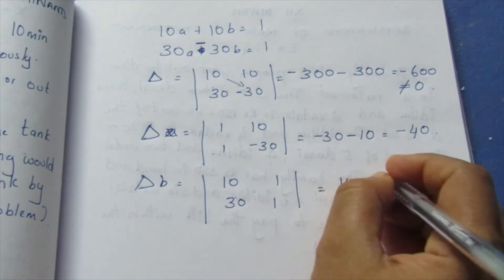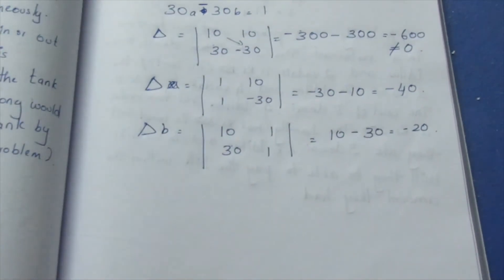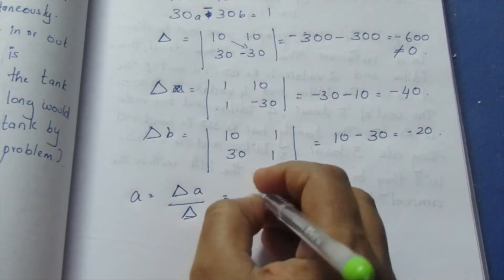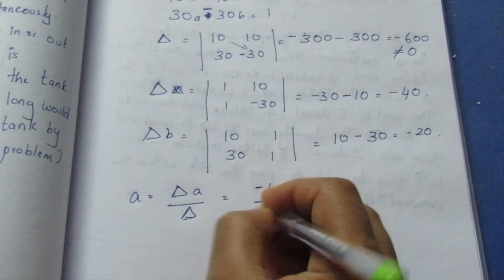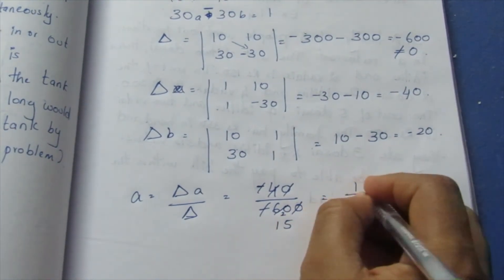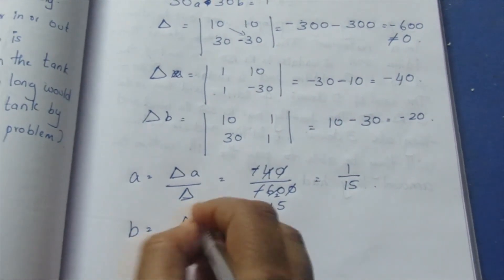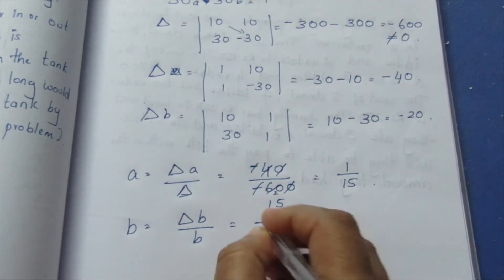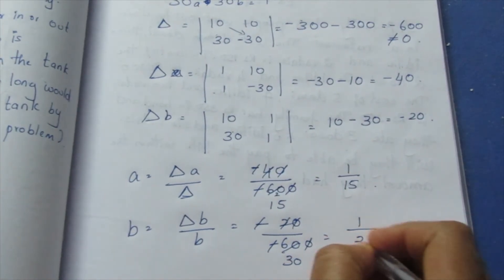Now 10 minus 30 equal to minus 20. So A is equal to determinant A by determinant, which is minus 40 by minus 600, which equals 1 by 15. B is equal to determinant B by determinant, equal to minus 20 by minus 600, which equals 1 by 30.